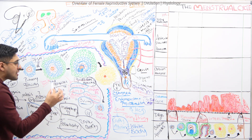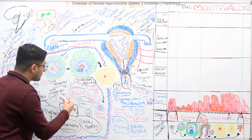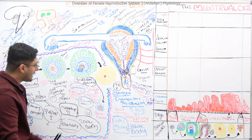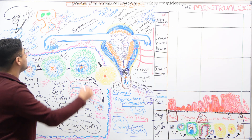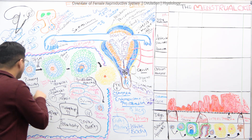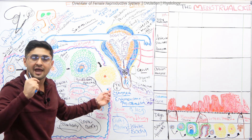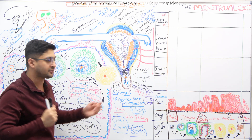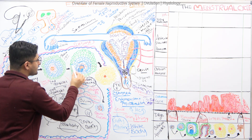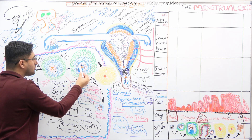Around day 12 or 13 of the typical 28-day menstrual cycle, the continuously rising estrogen levels suddenly create a positive feedback effect. This triggers a very high rise in FSH and a dramatic surge in LH — what we call the LH surge. Under the influence of the LH surge, blood vessels dilate, bringing increased fluid to the area.